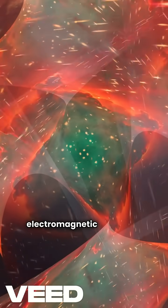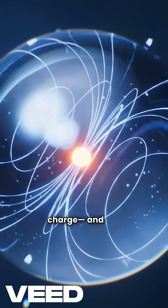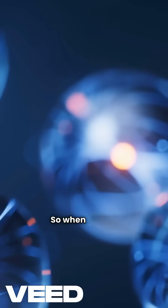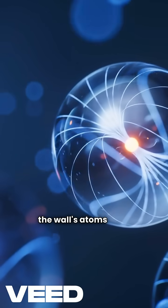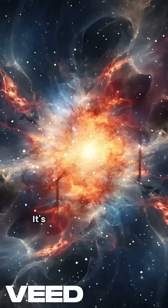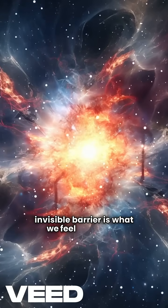Second, electromagnetic repulsion. All electrons have a negative charge, and like charges repel. So, when you try to walk through a wall, the electrons in your atoms and the wall's atoms push against each other. It's like two force fields colliding, and this invisible barrier is what we feel is solid.